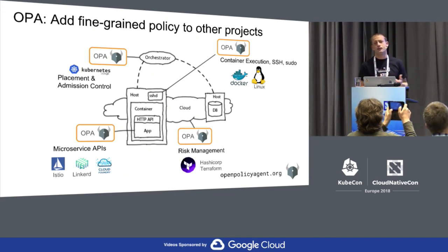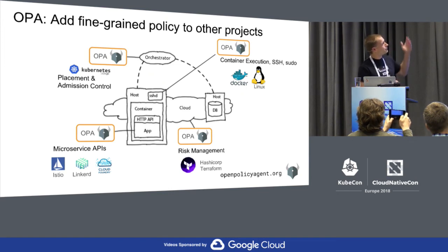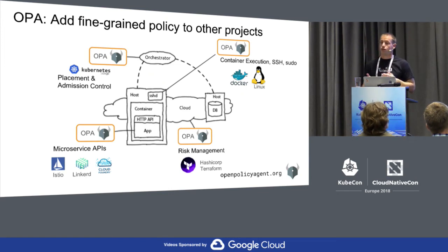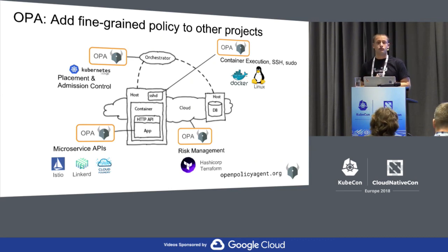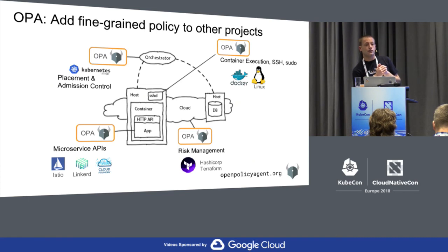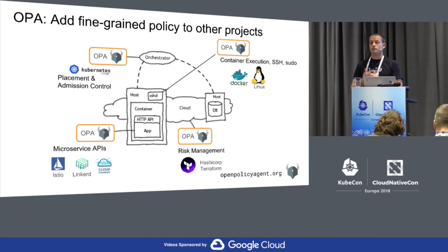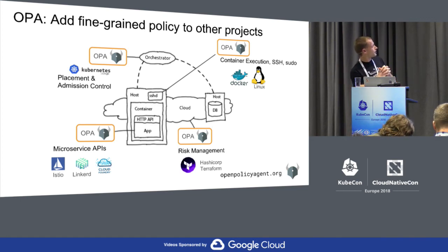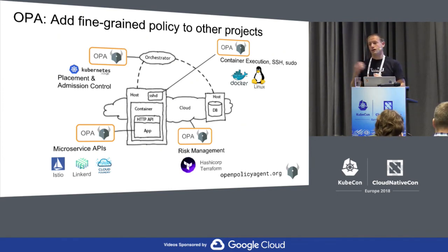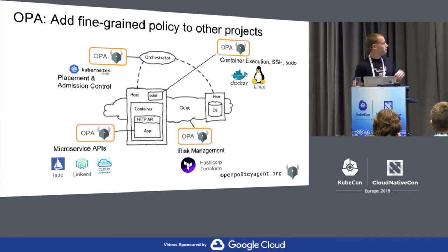Here are some examples of the kinds of integrations we've done with OPA. We've done integrations with Kubernetes to do admission control, with Linux to allow you to control who can SSH into a server or who can run sudo commands, with Docker to allow you to control what kinds of containers people can run, with Terraform to control what changes someone could make to a public cloud. You can use OPA to express policy and authorization over microservice APIs — every time a microservice receives an API call, is that authorized or not? And that's what Netflix has used OPA for.